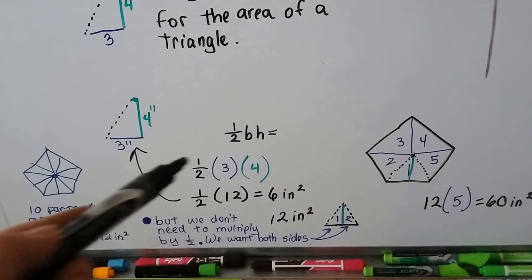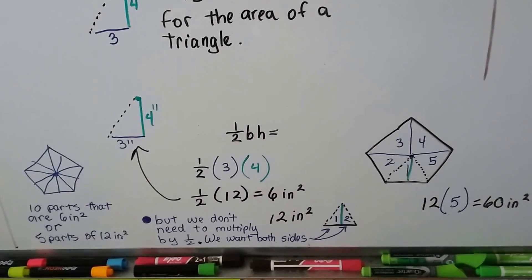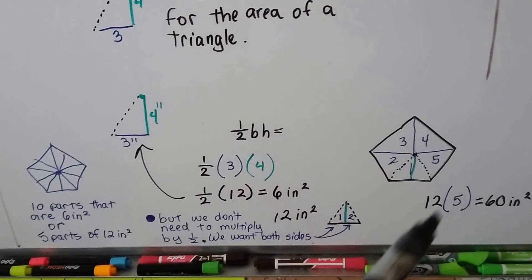Multiplying it by half and doing it by 10 is just creating extra work. See? Work smart, not hard. So that would give us 60 inches square.